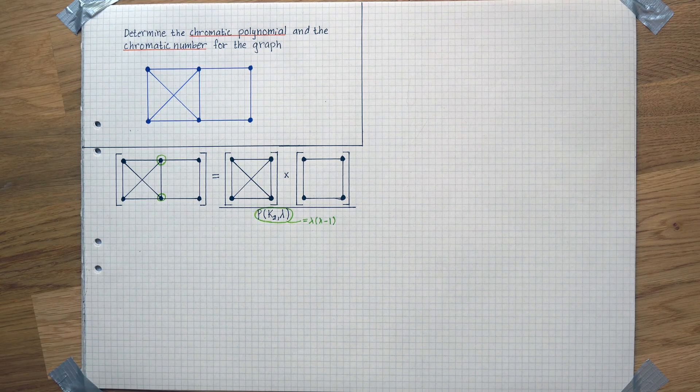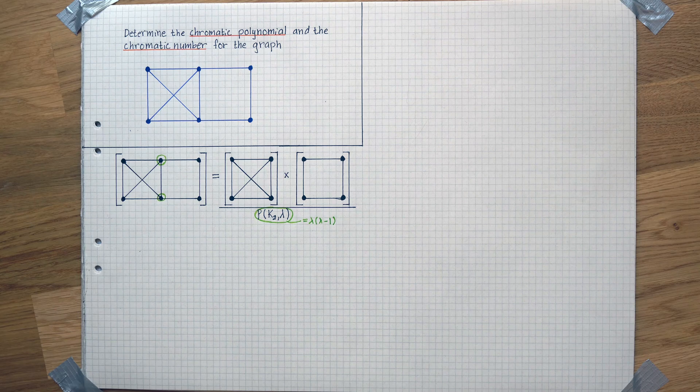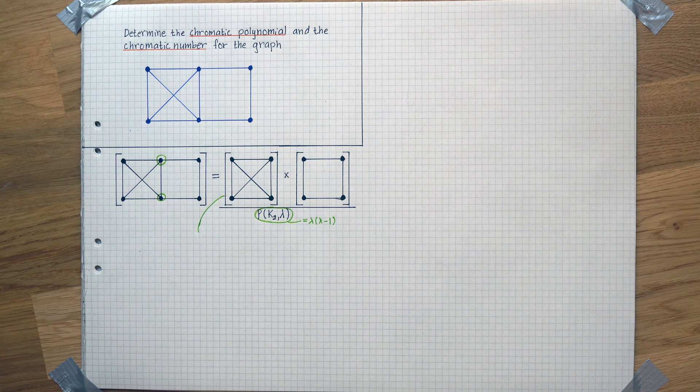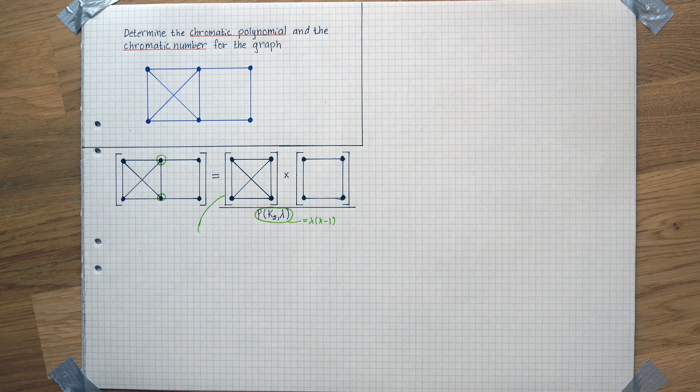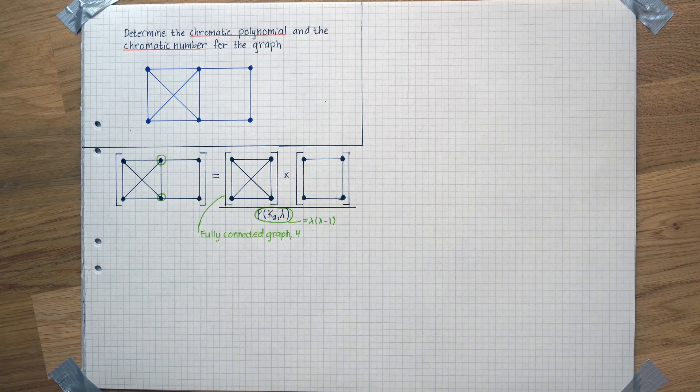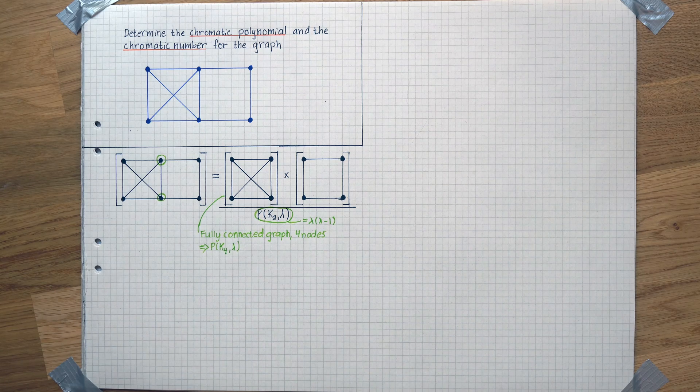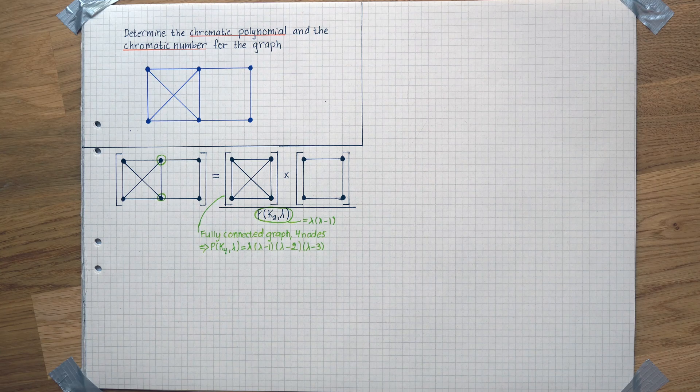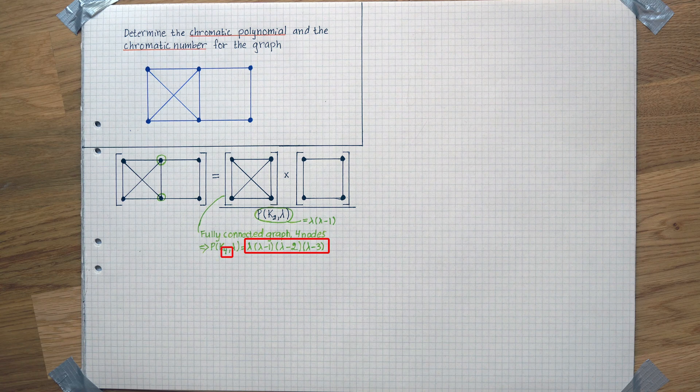This bit is equal to lambda times lambda minus 1. In this left graph, we can see that all nodes are connected to each other. That makes it a fully connected graph with four nodes, which then gives us P(K4, lambda) that is equal to this because of that 4.